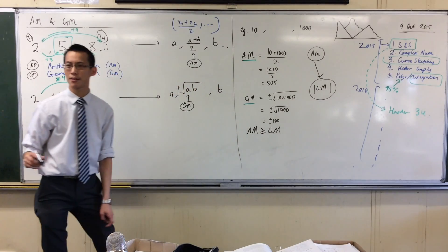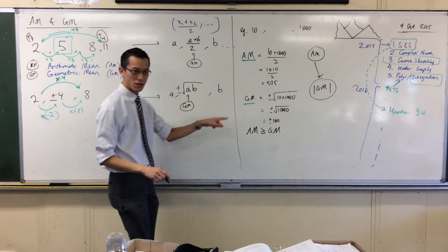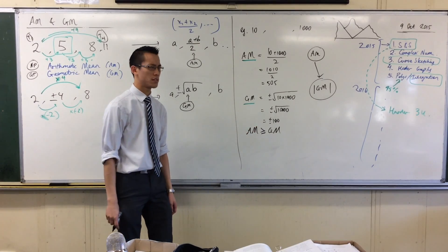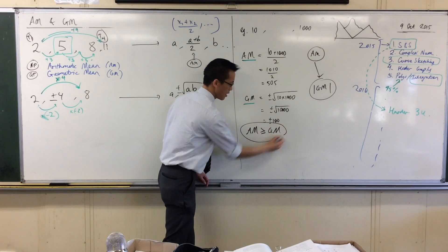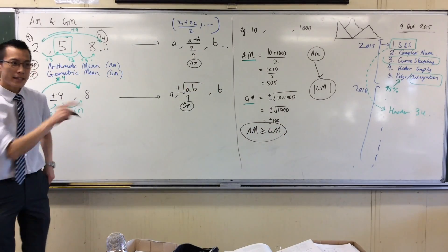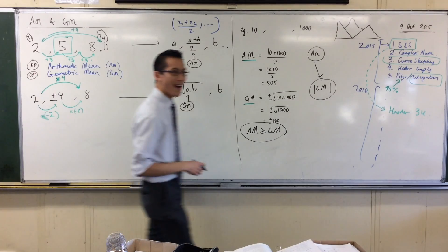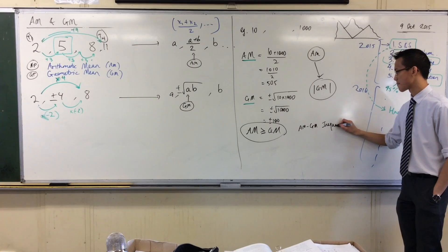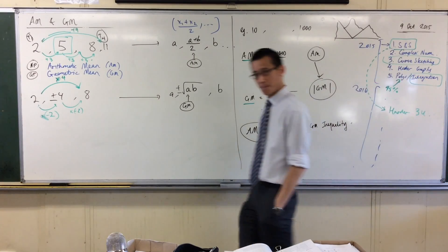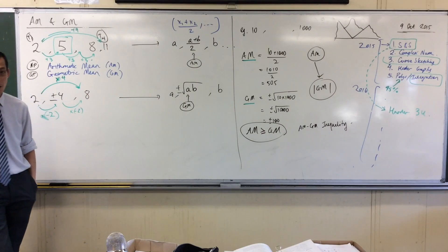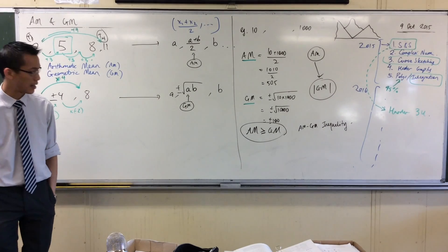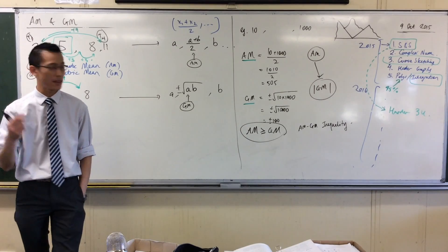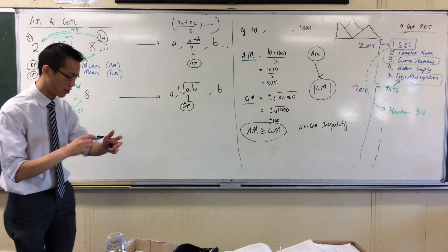They can be equal. I'll let you think about in what single case the AM and GM can actually be equal to each other. For all intents and purposes, the AM is always bigger than the GM. This result is called, unimaginably, the AM-GM inequality. Inequalities and proofs regarding inequalities are one of those heart-of-3-unit topics that we will address next year, but this is so easy to grasp now — I'm going to show you in two ways that would just be a crime not to show you. So I need some more space.